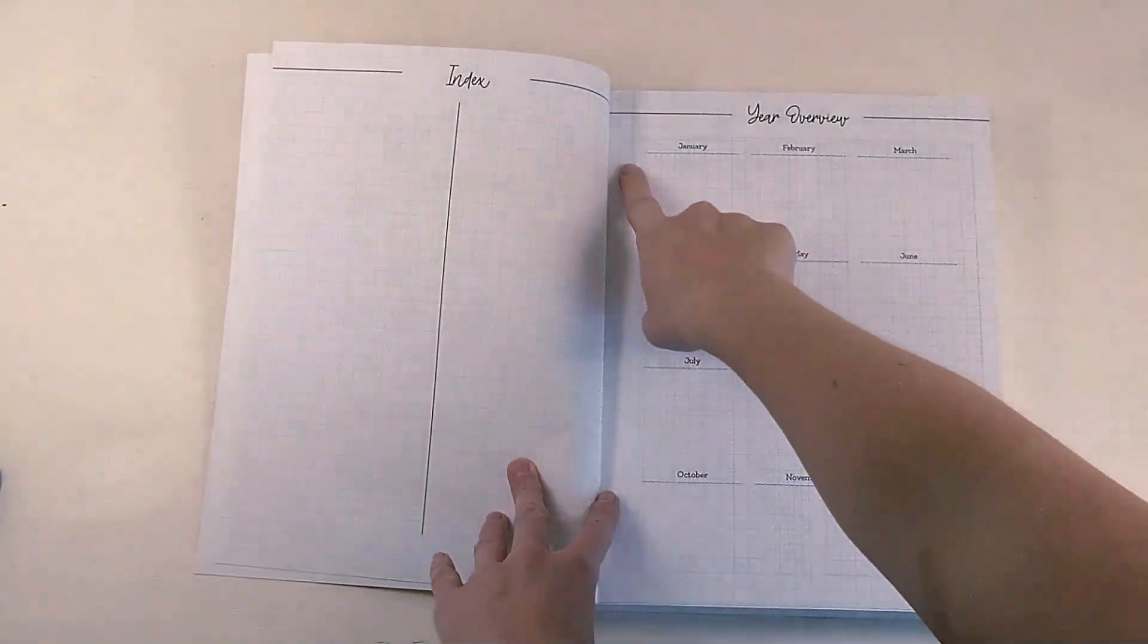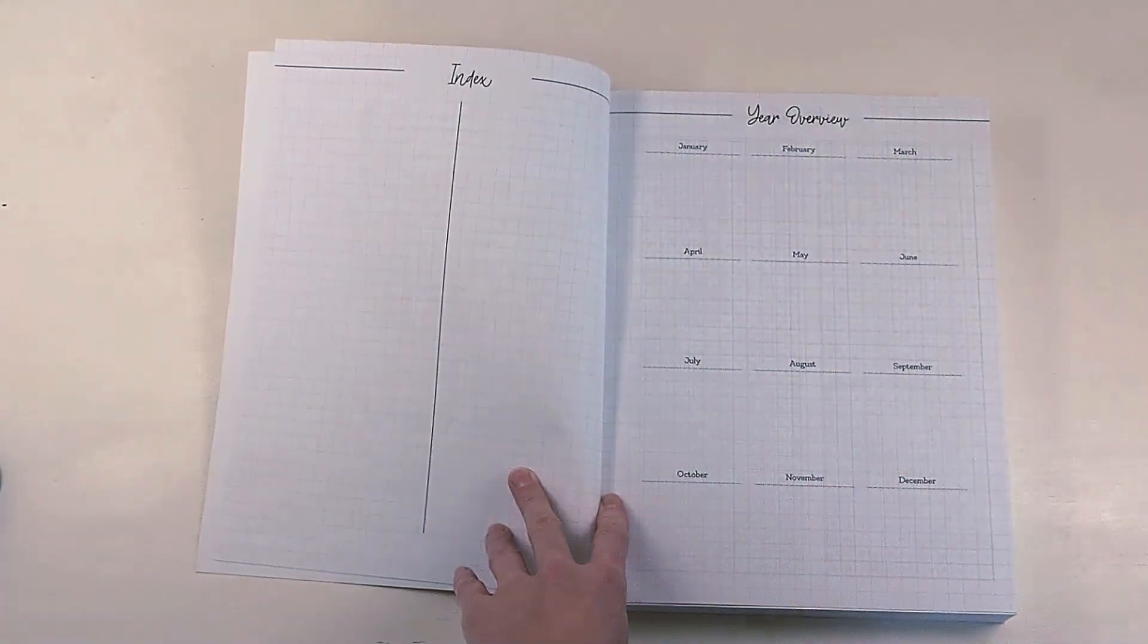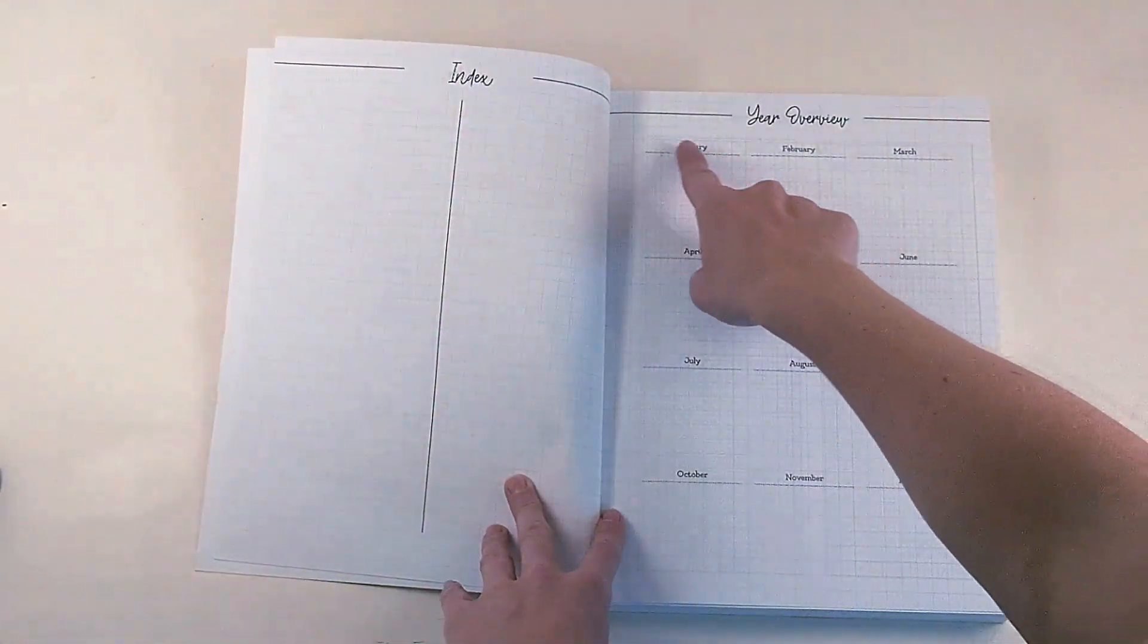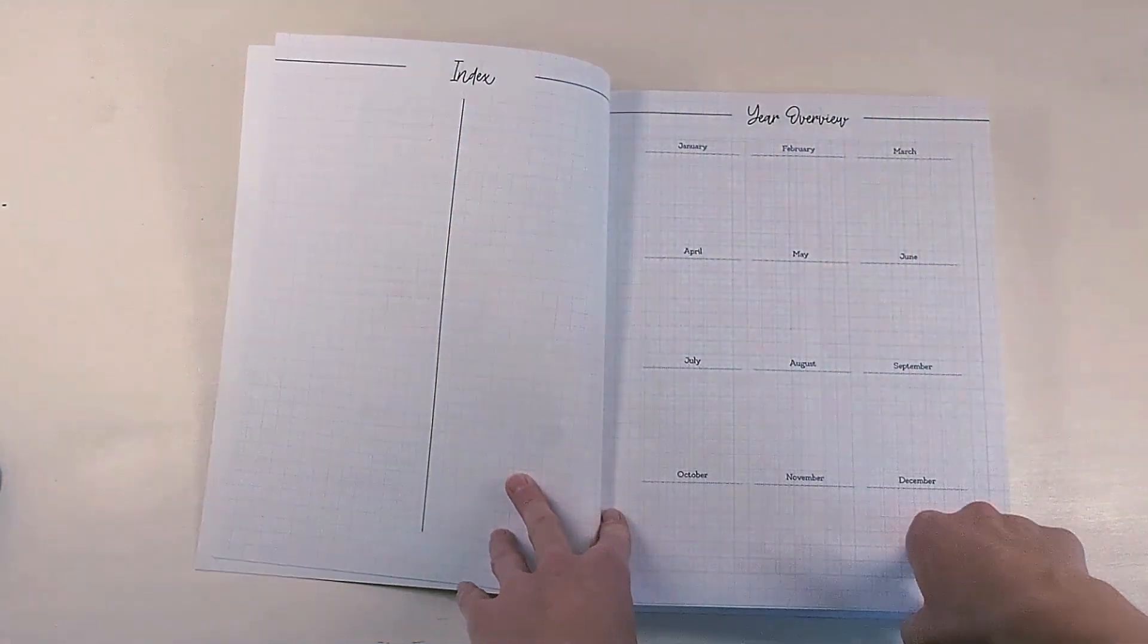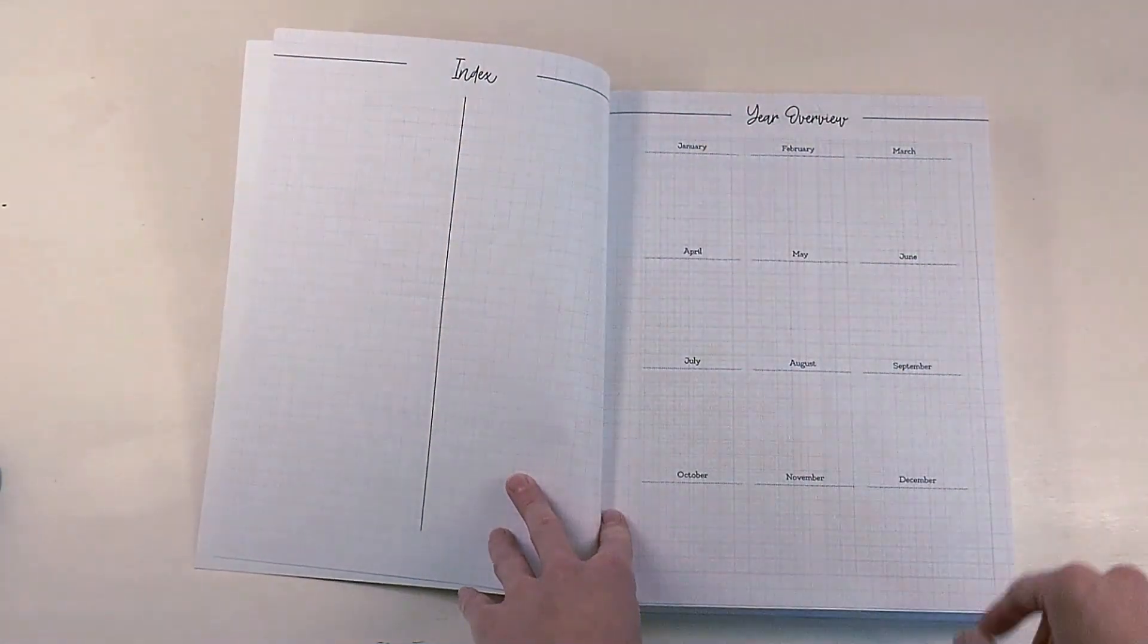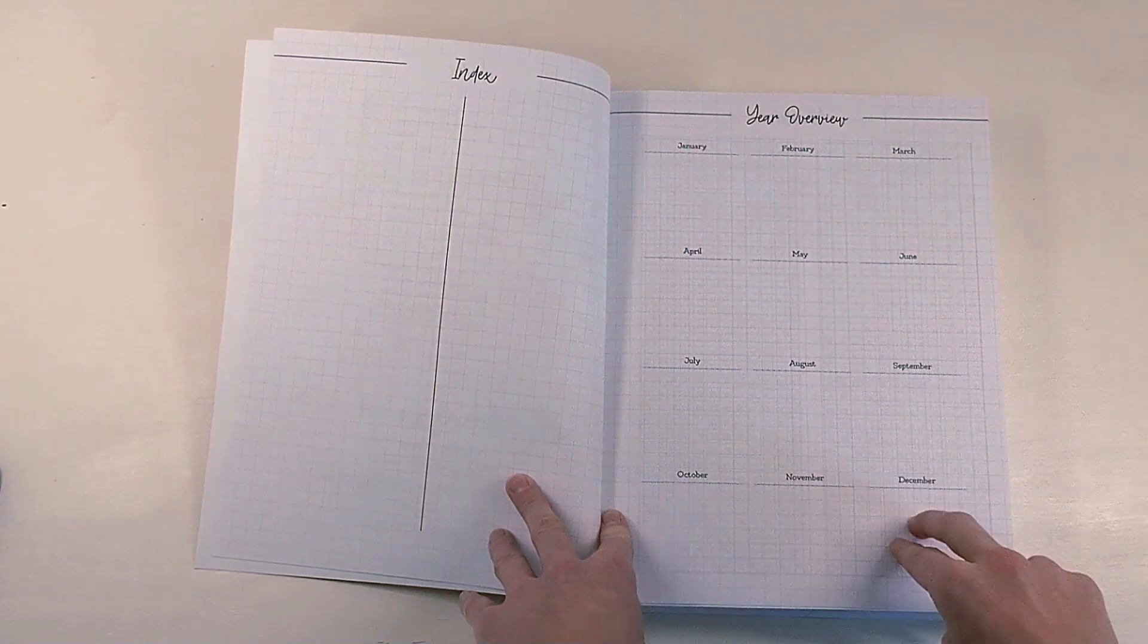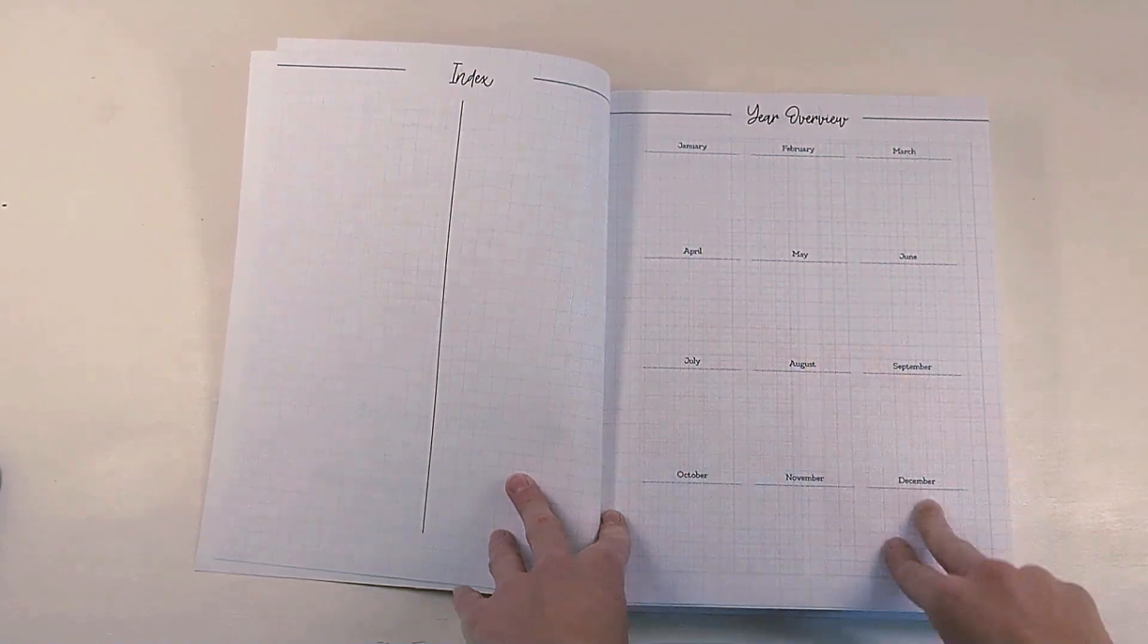But it does have grid lines here to help you write straight and take advantage of this small space so you can write more. This year overview is probably meant to write any important dates or plans that you have that you can just view at a glance.